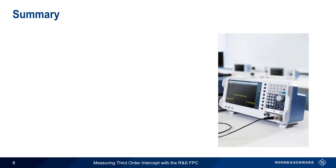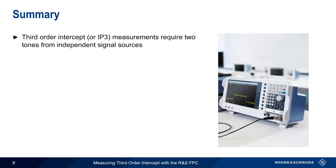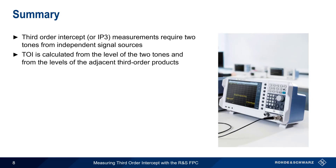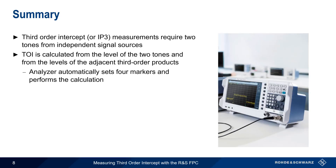Let's end with a short summary. Third-order intercept, or IP3 measurements, require two CW signals or tones from independent signal sources. These tones combine in the device under test, and third-order intercept is calculated using the level of the two input tones and the levels of the adjacent third-order products. The FPC does this measurement automatically by setting four markers — two on the fundamentals and two on the third-order products — and performing the calculation.